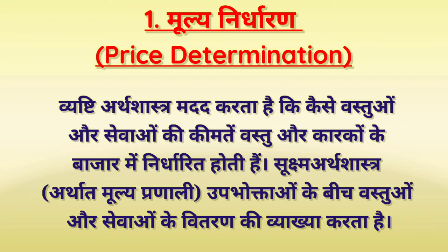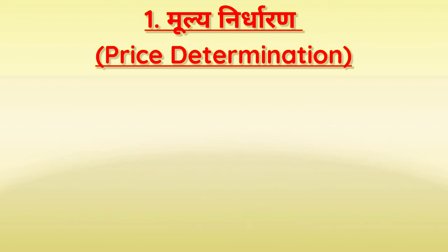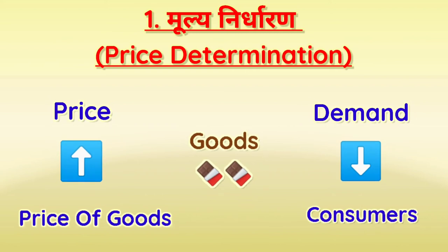उनकी कीमत कैसे निर्धारित होती है — Microeconomics explains the distribution of goods and services among consumers, यानि उनके बीच में जो services हैं और goods हैं उनका distribution कैसा है, उसकी व्याख्या करता है।